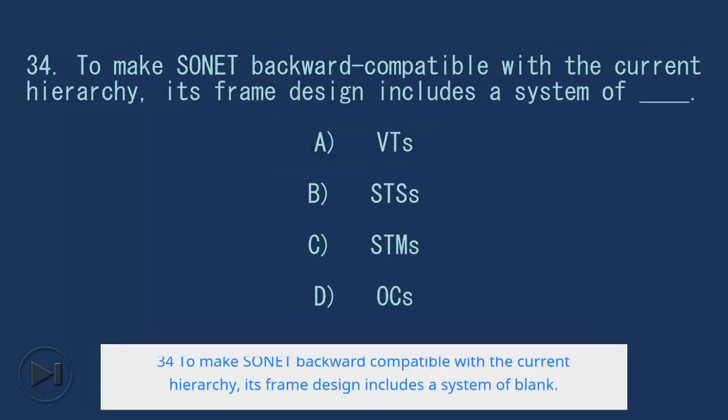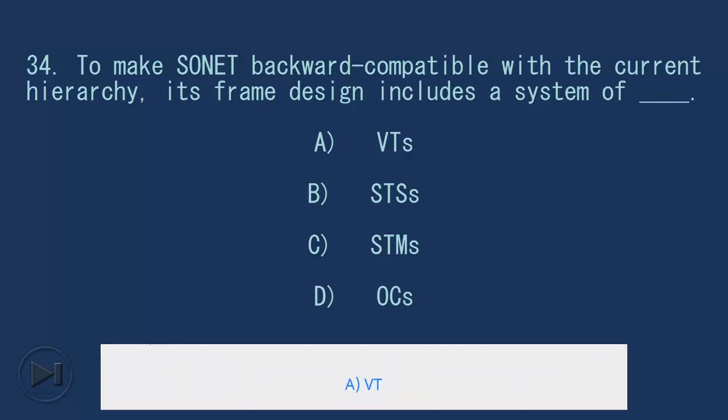34. To make SONET backward compatible with the current hierarchy, its frame design includes a system of blank. A. VT, B. STS, C. STM, D. OC. Answer: A. VT.